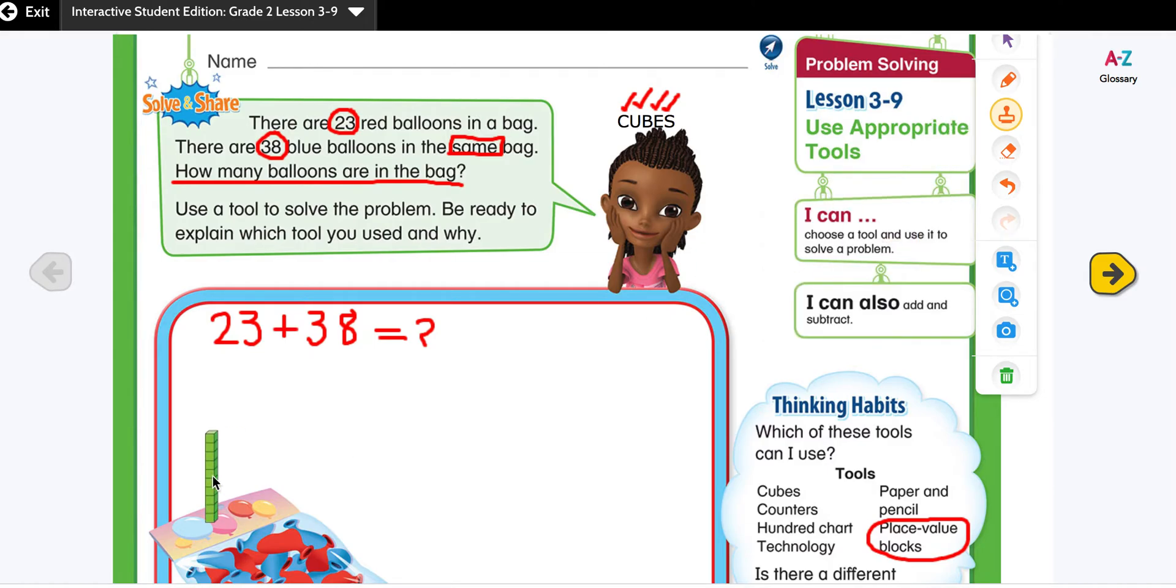23 has two tens, two tens, and three ones. That's 21, 22, and 23. So 10, 20, 21, 22, 23. Now let's look at the next number.